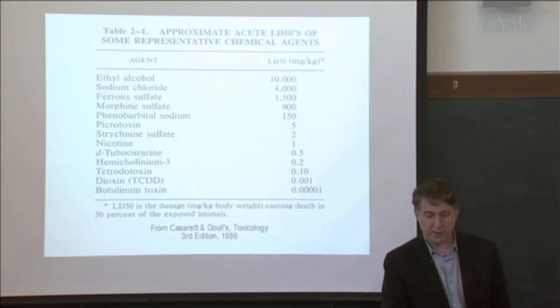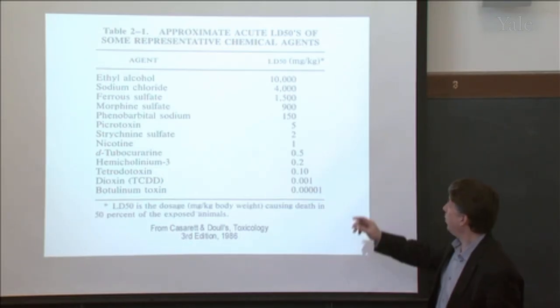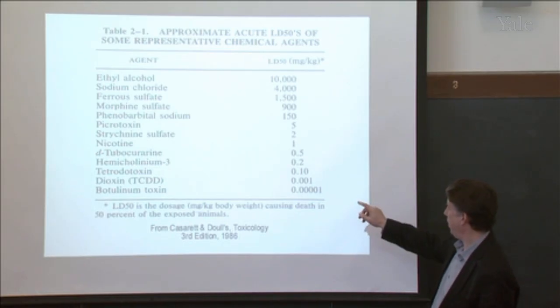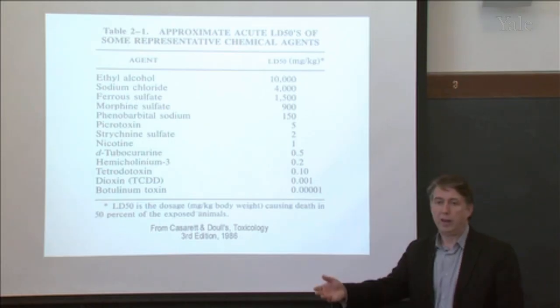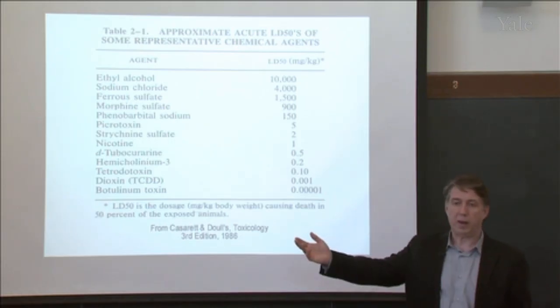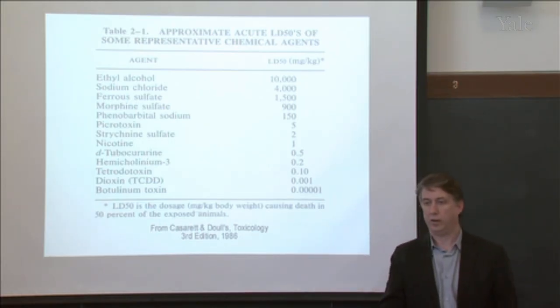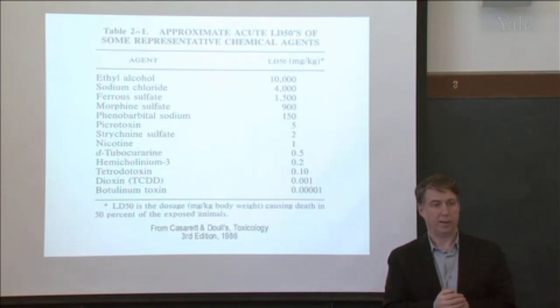You can see — crossing better than 10 orders of magnitude in terms of toxicity — from ethyl alcohol down through nicotine to dioxin, the most toxic synthetic substance, and botulinum toxin, a couple orders of magnitude more toxic still.